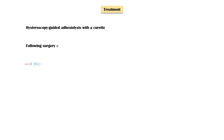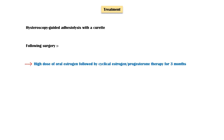Treatment of Asherman syndrome is hysteroscopy-guided adhesiolysis with a curette. Following surgery, patients are given a high dose of oral estrogen, followed by cyclical estrogen and progesterone therapy for three months, to prevent the reformation of adhesions. An intrauterine device may also be inserted for the same reason.